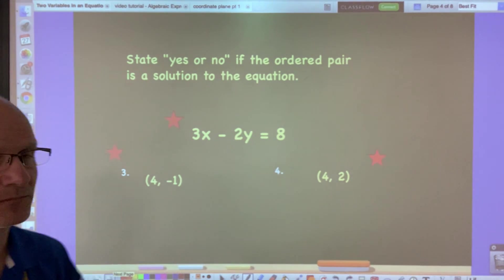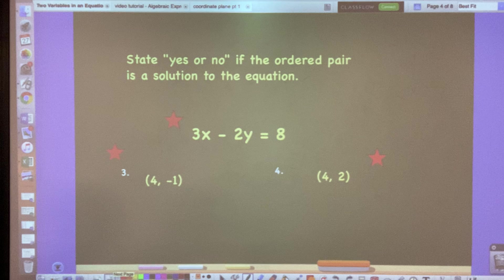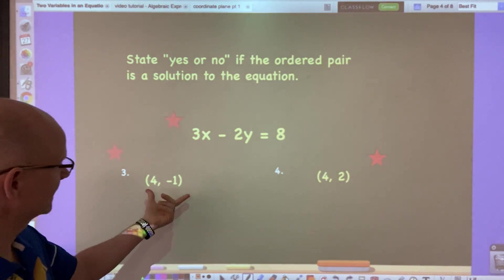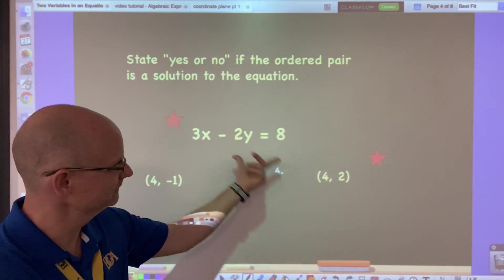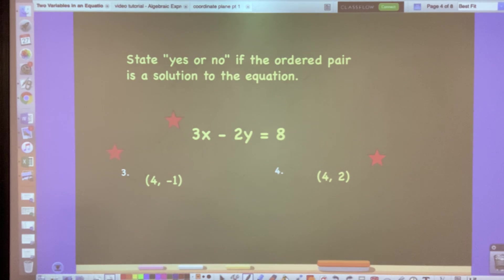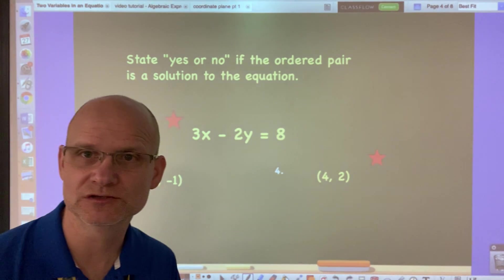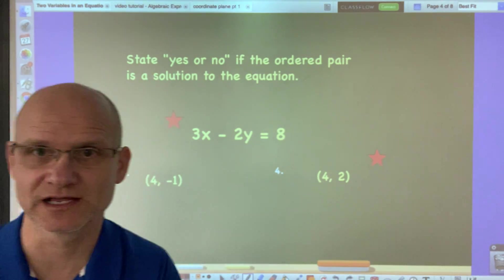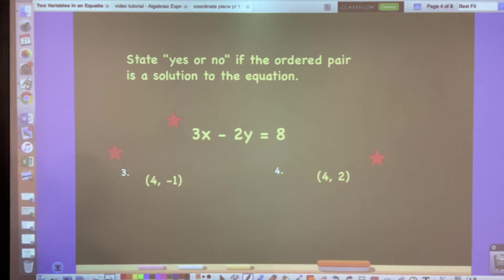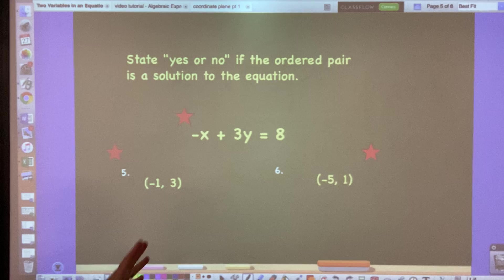This equation is a little more complicated: 3x - 2y = 8. Again, you're just taking this ordered pair, plug it in and see if it works for each one. So this is problem 3 and problem 4. Press pause when you get that time and work it out.